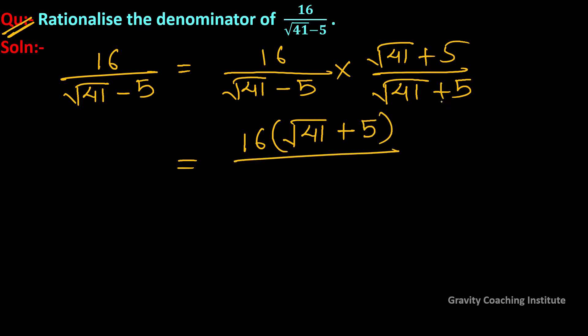In the denominator we will multiply the terms. To simplify, we will use the identity a plus b into a minus b equals a square minus b square.